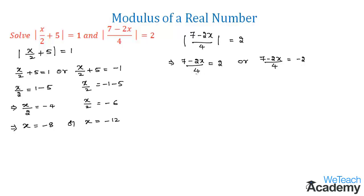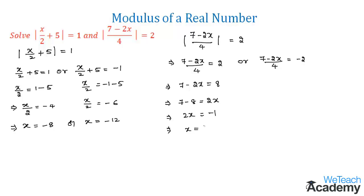For the case (7 - 2x)/4 = 2: cross multiplying gives 7 - 2x = 8. Transferring terms, we get 7 - 8 = 2x, so 2x = -1, and therefore x = -1/2.